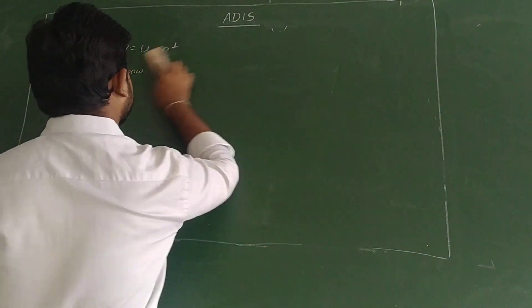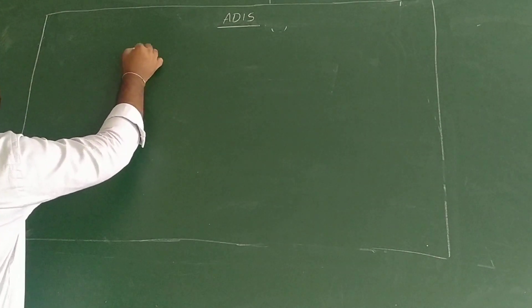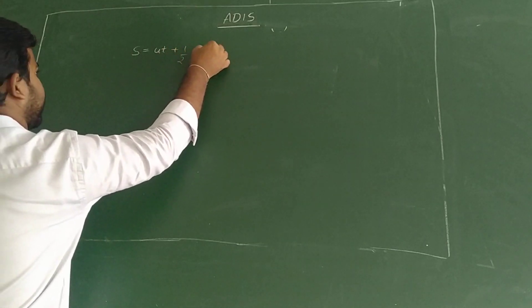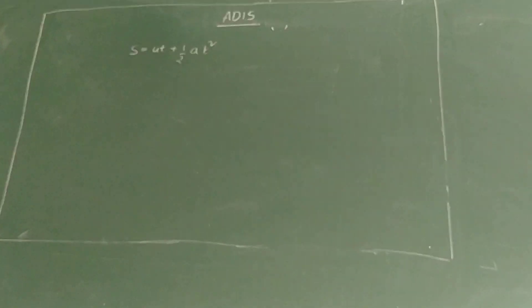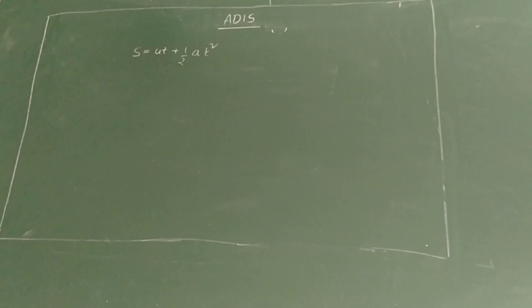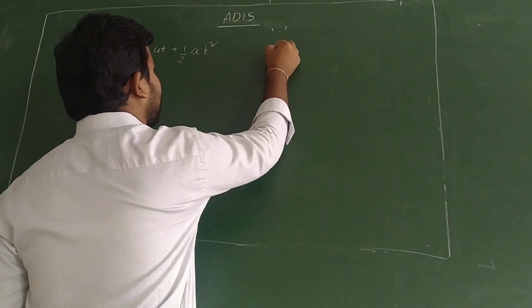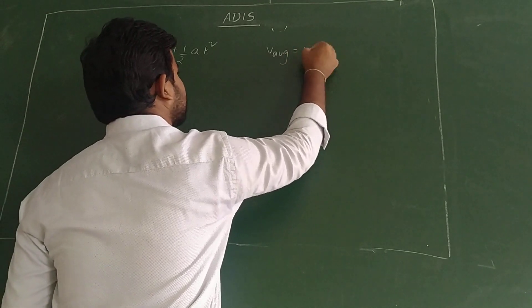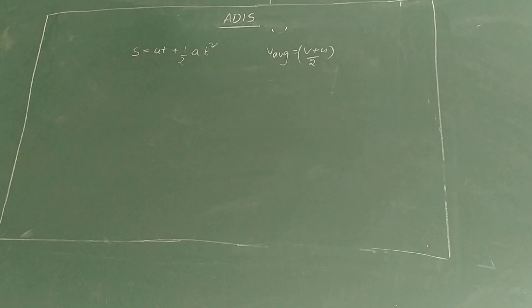Next, the second equation: s = ut + ½at². To derive this, we need the average velocity formula. Average velocity equals (u + v) / 2. We know distance = average speed × time.